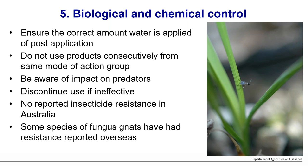There are no reported cases of insecticide resistance in Australian fungus gnats. Overseas, there are a few species with scientifically proven pesticide resistance, but not the species we have in Australia. That doesn't mean it will never happen — if products are used enough, resistance is possible. If you suspect resistance, it's important to confirm it and consider whether application errors were a factor.